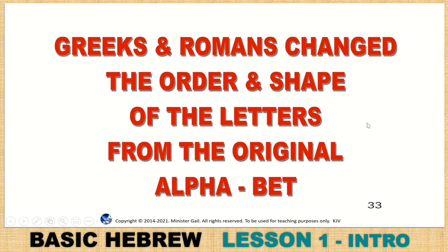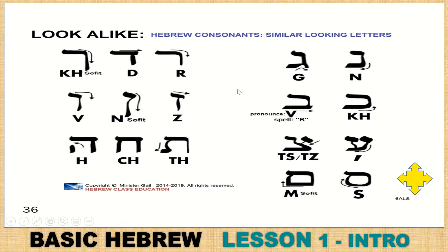Greek and Romans changed the order and the shape of the letters from the original Hebrew alphabet. Here are look-alikes — remember they are all consonants. Y is a consonant in Hebrew; it is not a vowel. You have the Khaf, the Dalet, and the Resh. Resh has more of a sweep to the top of it. The Dalet has a little door edge at the top. The Khaf at the end falls below the line. The letters sit on a line, and there are five that fall below the line.